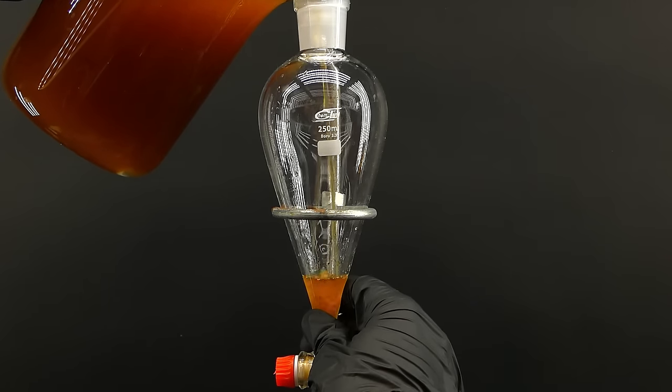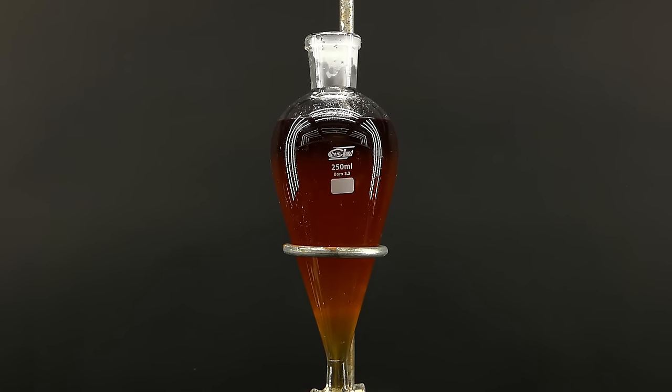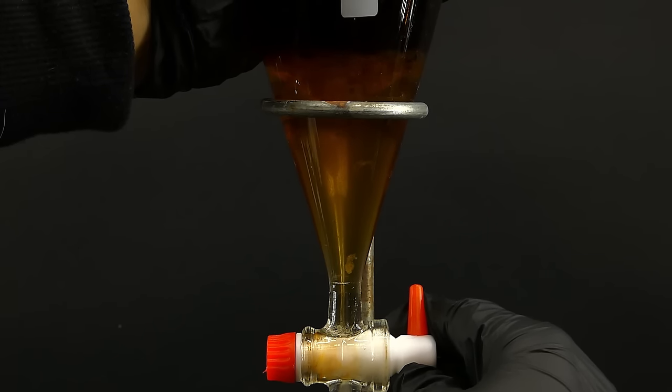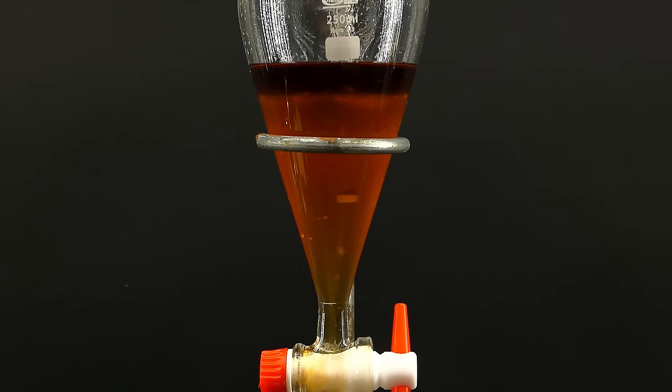I got the mixture into a separatory funnel, and the layers didn't really want to separate because they now have similar density, since most of my product goes over to the ether, making it slightly denser than the water layer. After about half an hour, the layers finally separated, so I drained them into separate beakers and repeated this process until no more of the mixture remained.